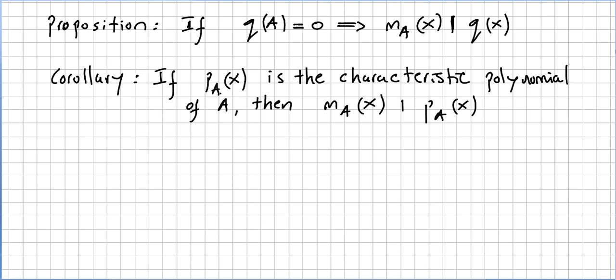If the characteristic polynomial P_A(x) is the characteristic polynomial of an operator A, then the minimal polynomial, the smallest degree monic polynomial f(x), will divide the characteristic polynomial.